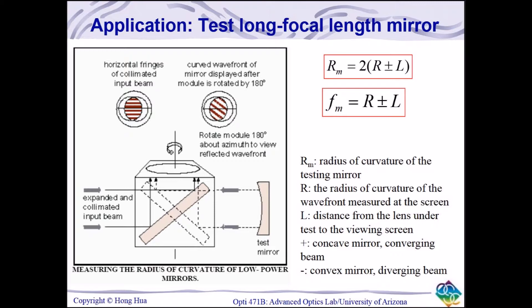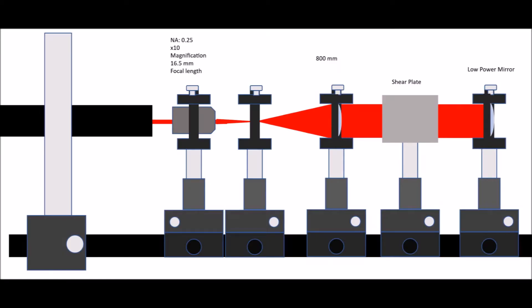Since our incoming light of the test mirror is collimated, the reflected wavefront must be equal to that of the mirror's radius of curvature, with an offset due to the distance from the observation screen.